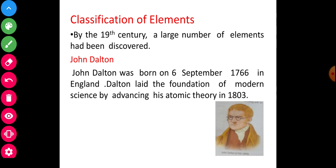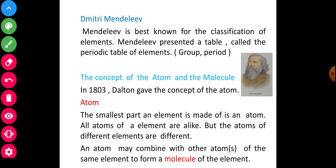Classification of elements. By the 19th century, a large number of elements had been discovered. Picture already here: John Dalton, born 6th September 1766 in England. He gave atomic theory in 1803. Next: Mendeleev. He was a famous scientist. Mendeleev is best known for the classification of elements. Mendeleev presented a table called the periodic table of elements, divided into groups and periods.